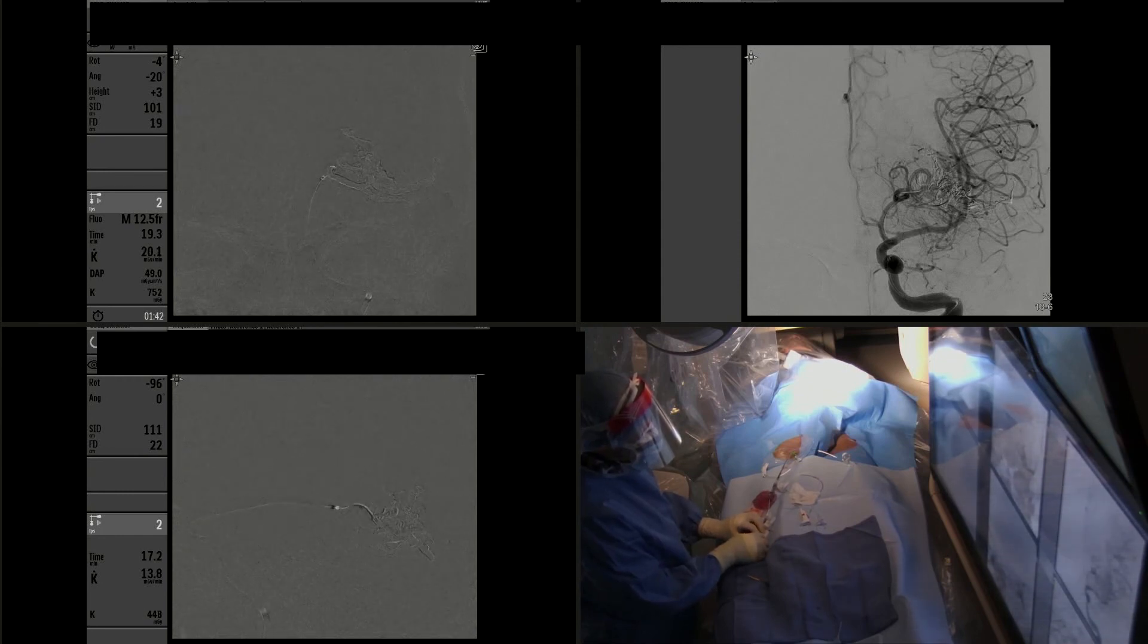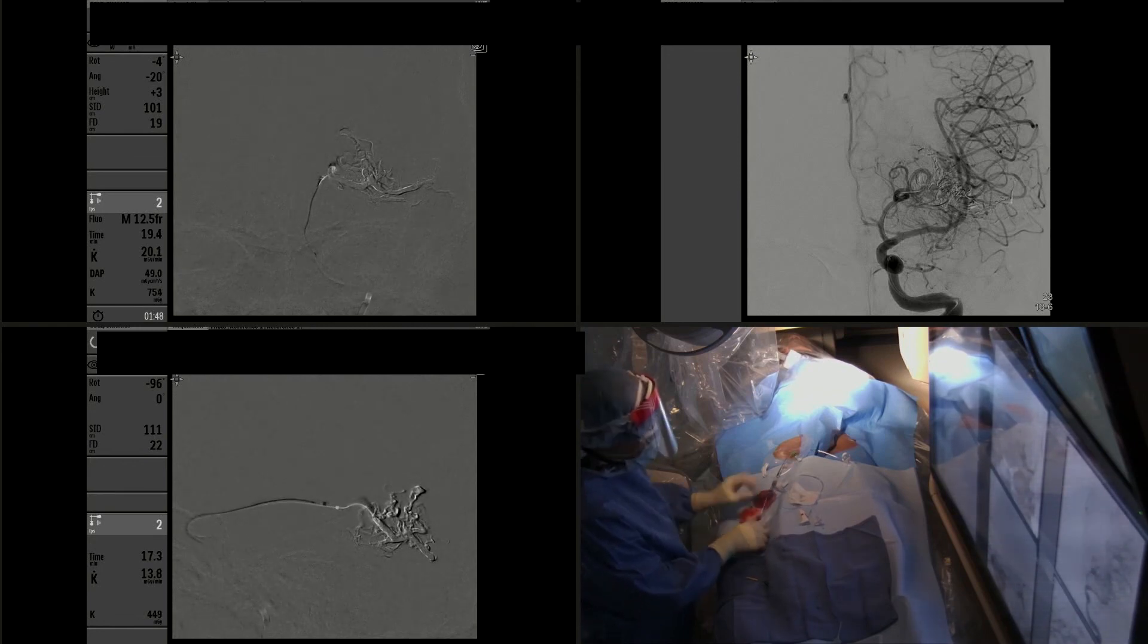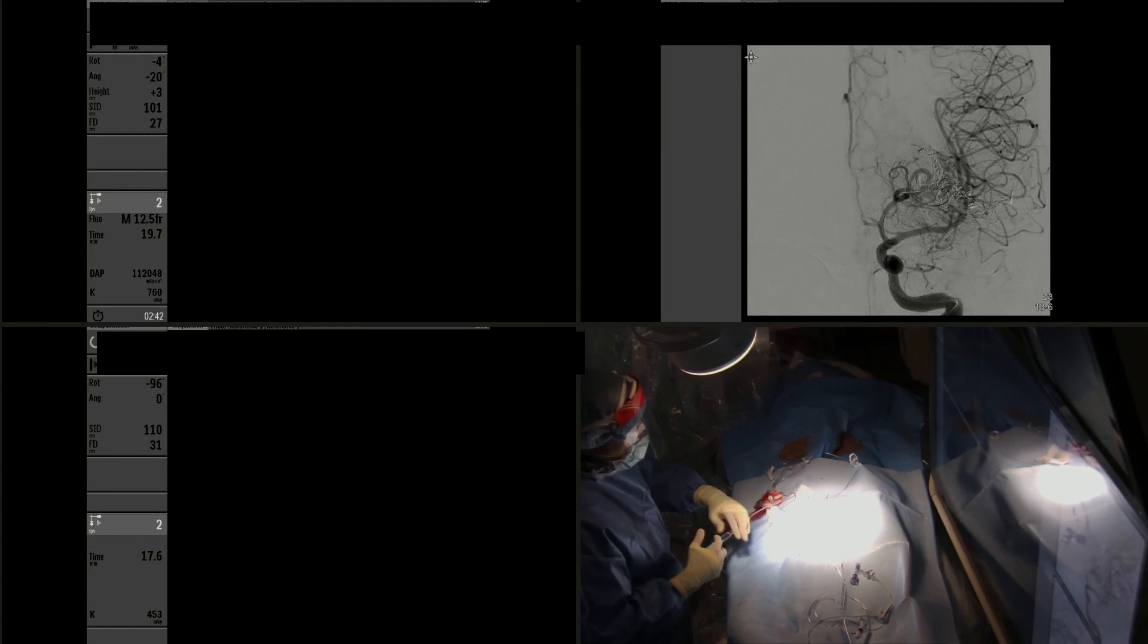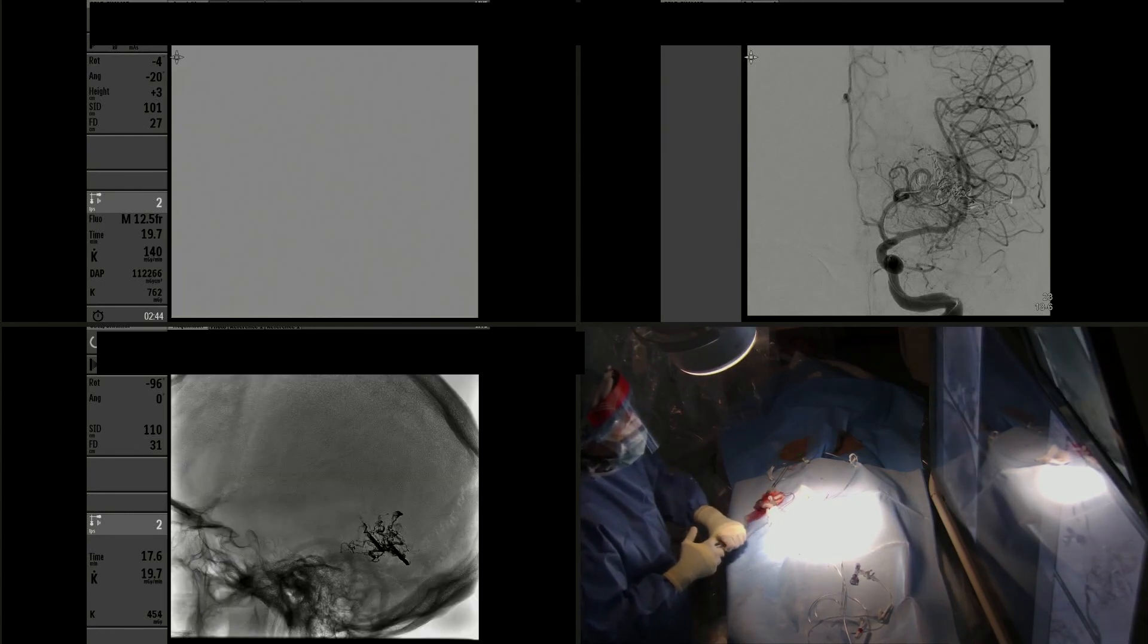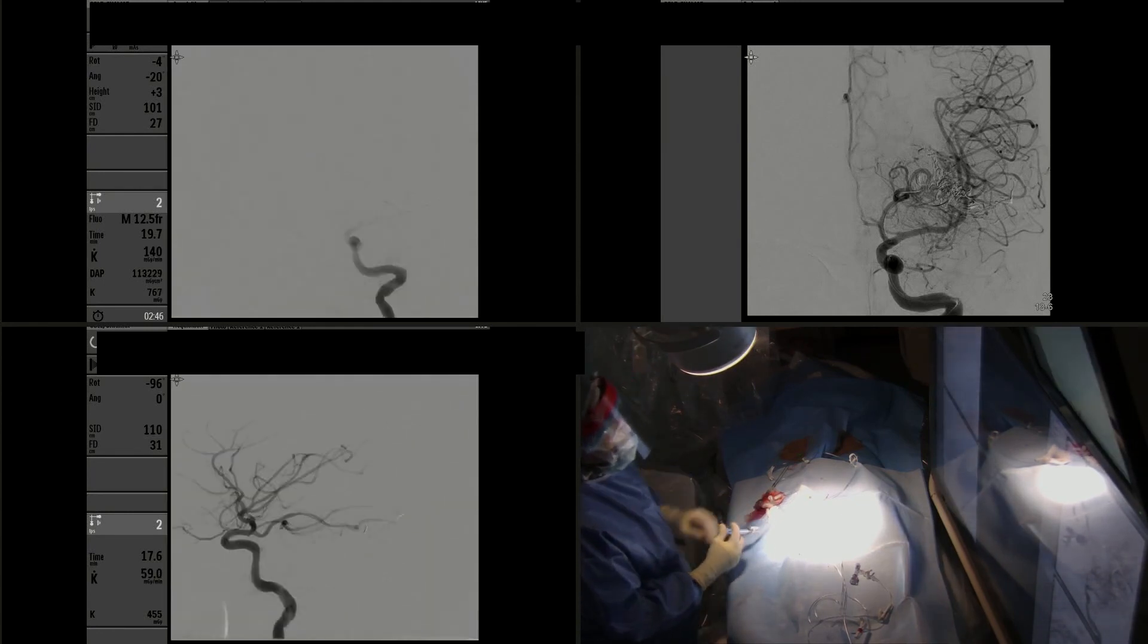You're going to see again we're straightening the vessel and the distal access catheter again moves more distally. That helps us to be able to remove the microcatheter, and this is our control angiogram at the end of the procedure.